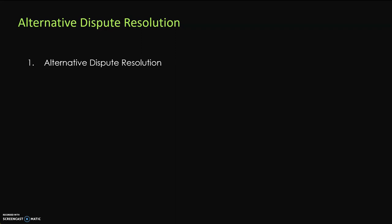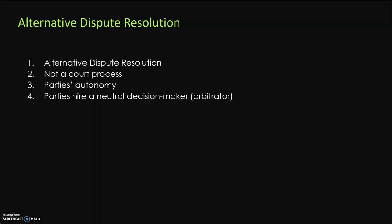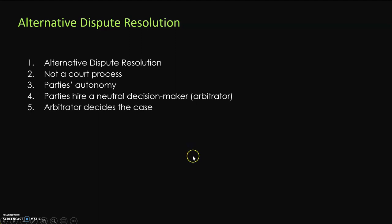Mediation is another process that you can have. It is important to understand that arbitration is not a court process. It is a process that is outside of the court and it is arranged by the parties to a dispute. What parties do is agree to hire a neutral decision maker, which is called an arbitrator. Most arbitrators in Canada are either senior lawyers or retired judges, hired by parties to hear their dispute and provide a decision.